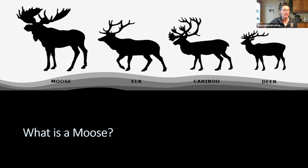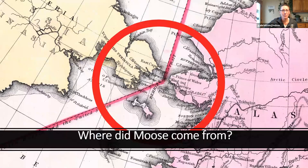Moose, being the newest to North America, have only been here about 15,000 years. They originated from Siberia, and there are several theories as to how they got over into North America, but the bulk of those theories really come down to the Bering Strait and the land bridge between there. There are four different subspecies of the moose family.